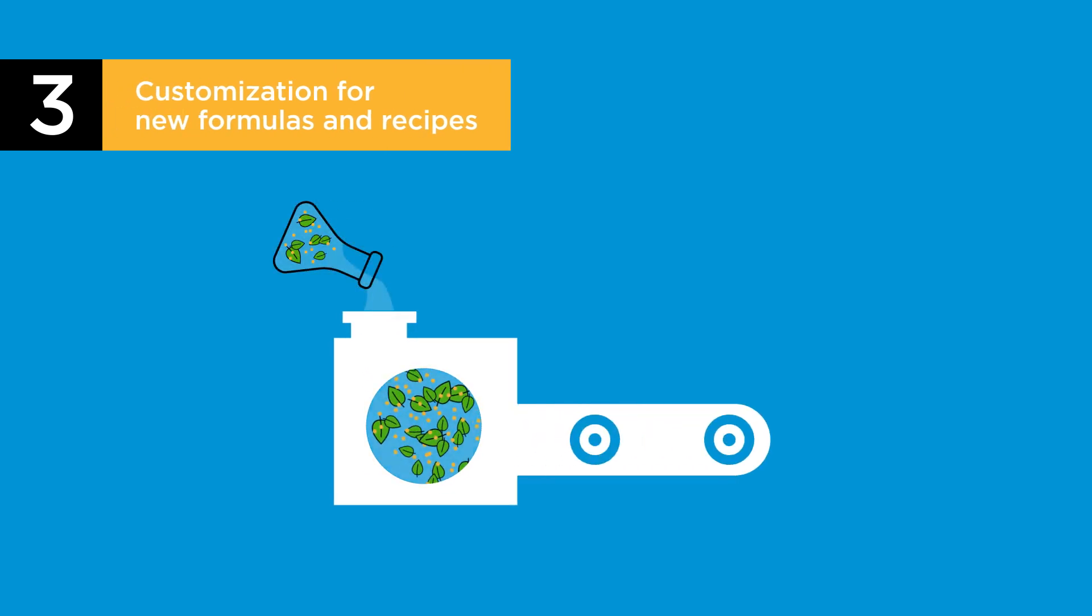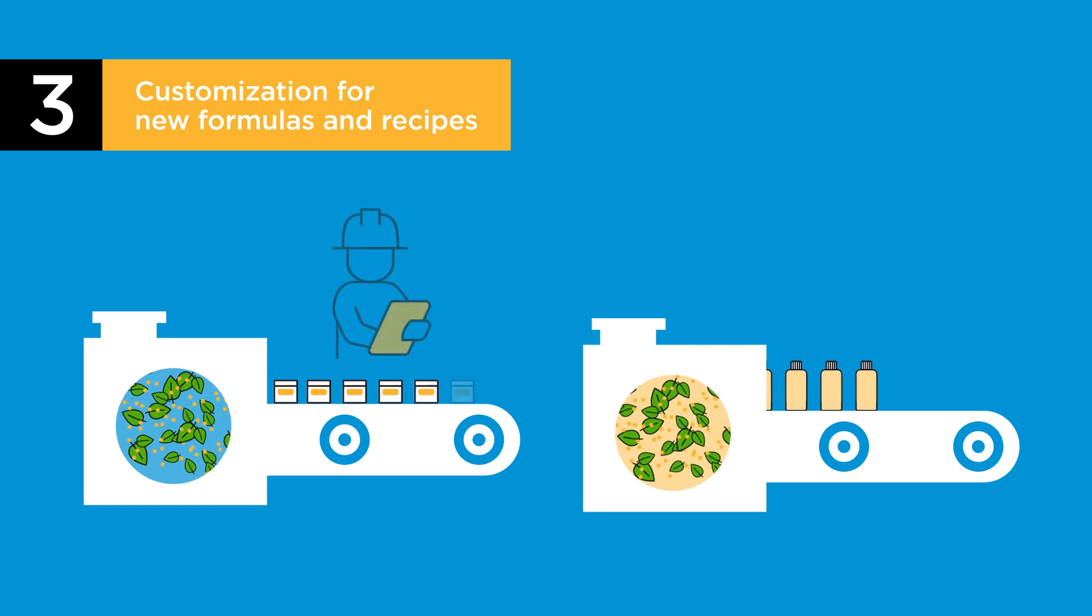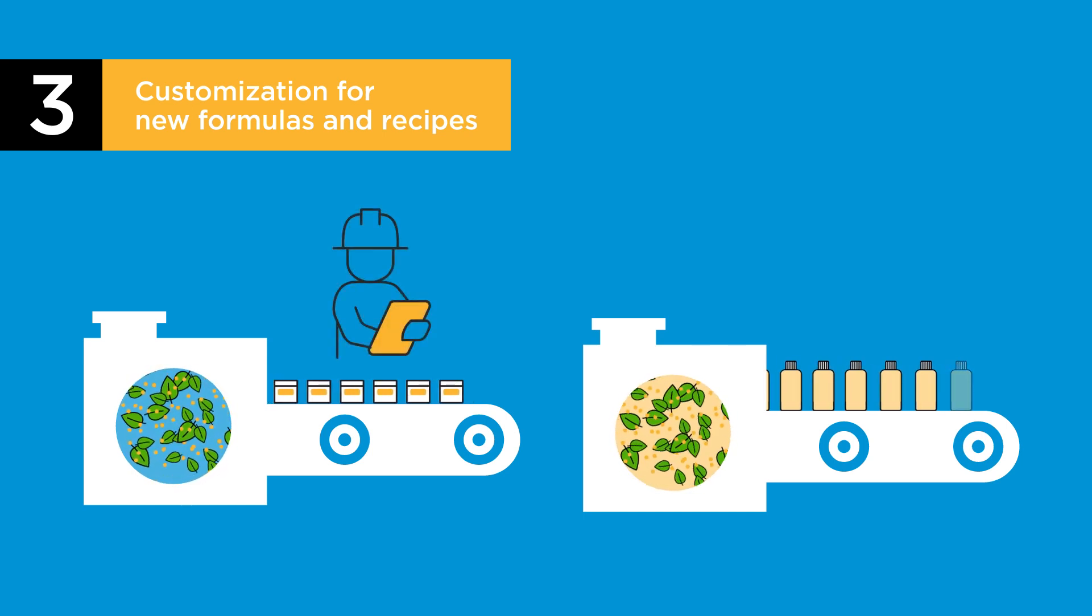An ERP should offer enough flexibility to modify formulas or recipes quickly and easily, so manufacturers can meet changing market needs or adhere to regulations.